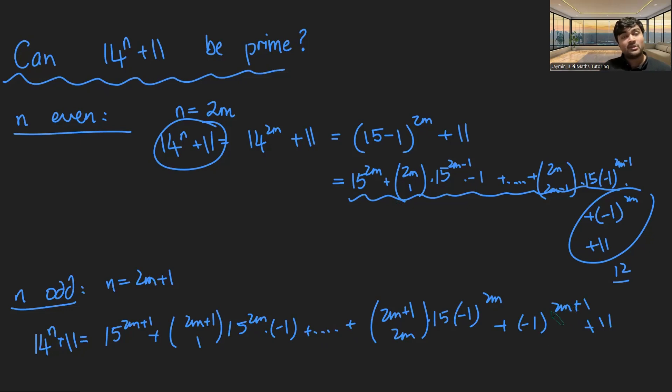...2m plus 1 is odd. So minus 1 to an odd number is minus 1 plus 11. That thing there is now 10. And now all of these terms here still have the 15 in. And so that's going to be a multiple of 5. If you add 10 to a multiple of 5, still going to be a multiple of 5. So this thing here will be a multiple of 5.